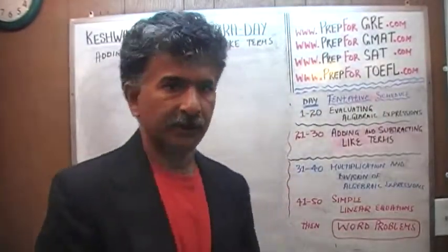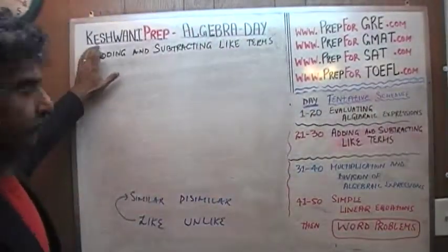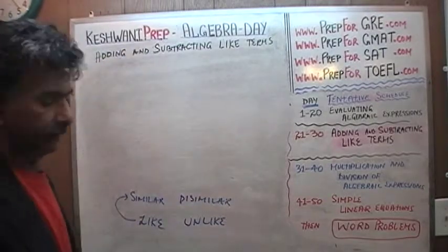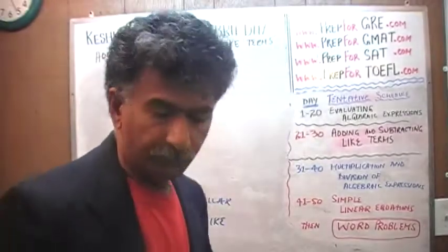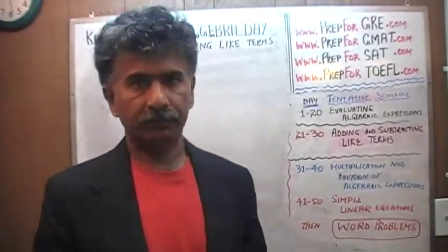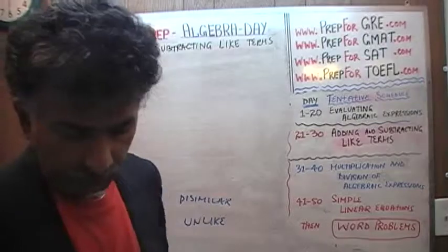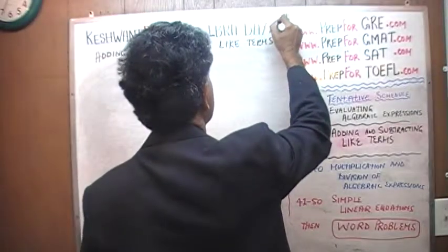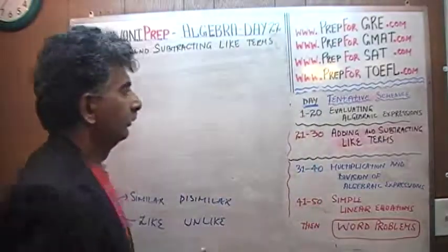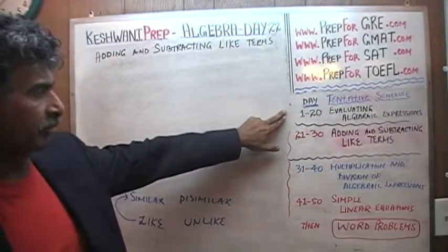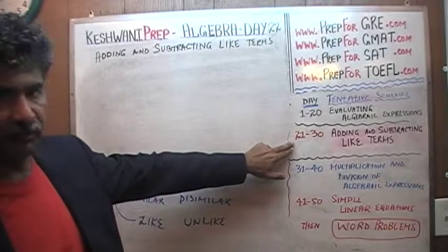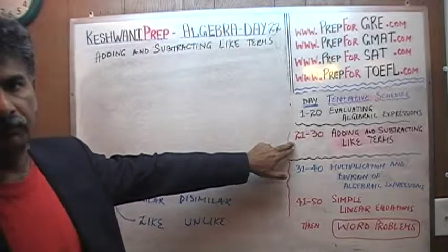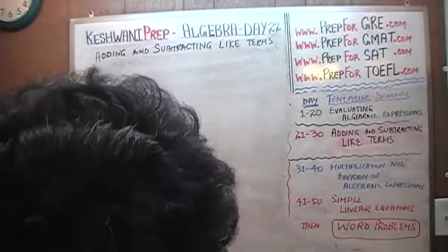Hello, my name is Keswani — that's K-E-S-H-W-A-N-I. We are here because we want to learn algebra. Today is Day 22. For the first 20 days we learned how to evaluate algebraic expressions, and starting from yesterday, Day 21, we are going to be learning how to add and subtract like terms.